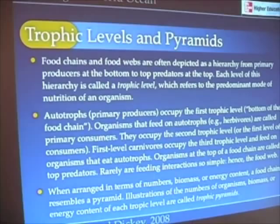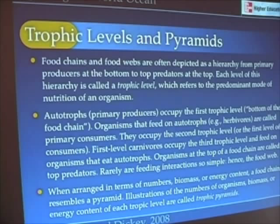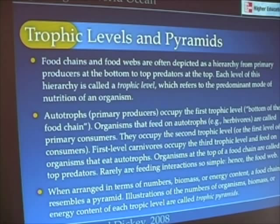A trophic level really refers to the predominant mode of nutrition of an organism. We talk about autotrophs — automatically feeding. Those organisms that photosynthesize or chemosynthesize occupy the first trophic level, the bottom of the food chain. Organisms that feed on the autotrophs, the herbivores, are the primary consumers and occupy the second trophic level.